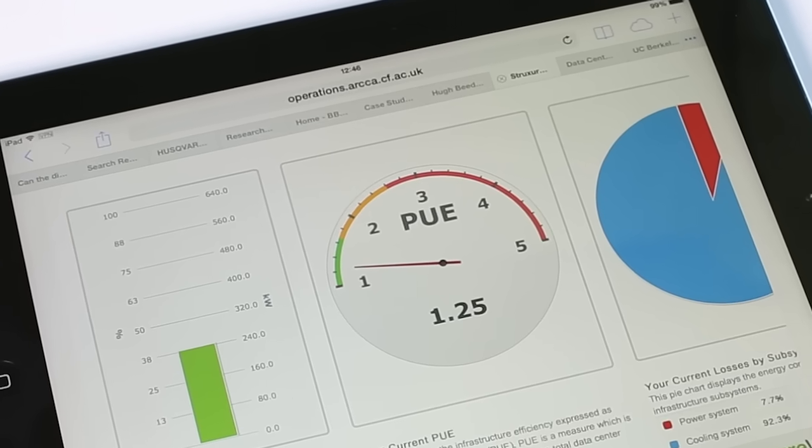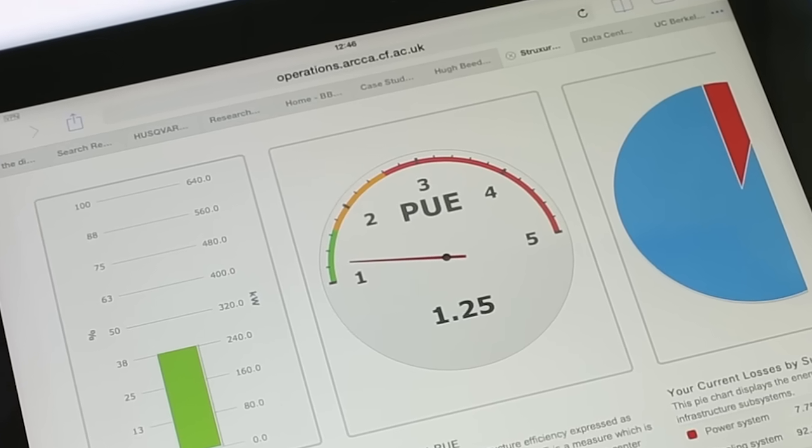I can see how the PUE has been performing, I can look at water temperatures leaving the chiller, entering the chiller, how fast the chiller is operating, how much the compressor pump is operating.